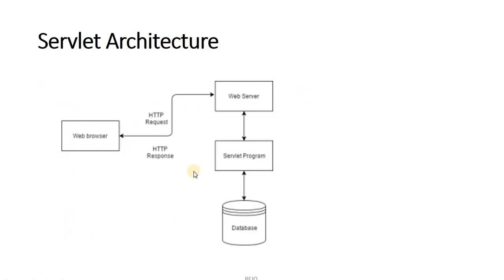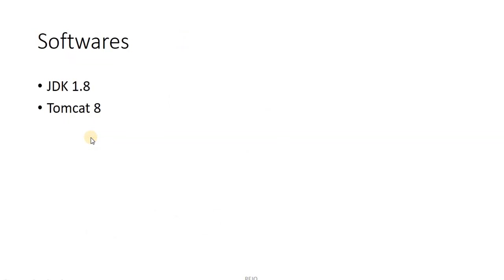This is the pictorial representation of the previous slide. The web browser on the client side sends the request to the web server. The web server identifies the corresponding servlet program and passes the request to it. The servlet program processes or manipulates the request, generates output, and sends it to the web server. The web server sends that output as an HTTP response back to the client and displays it.